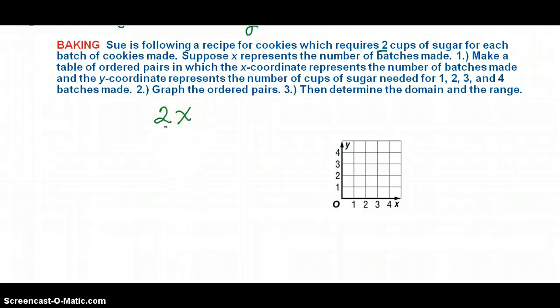So that's how I would write that expression, 2x. It says number one, make a table of ordered pairs in which the x-coordinate represents the number of batches made and the y-coordinate represents the number of cups of sugar needed. And let's test this for 1, 2, 3, and 4 batches. Okay, so first thing they're asking me to do is to make a table. Here I go. We did this the other day. So this is going to be my input, my x values. They said that those were batches and they want me to test it for 1, 2, 3, and 4 batches. Then my output is going to be my y value. And I don't know what those are yet until I do the operation.